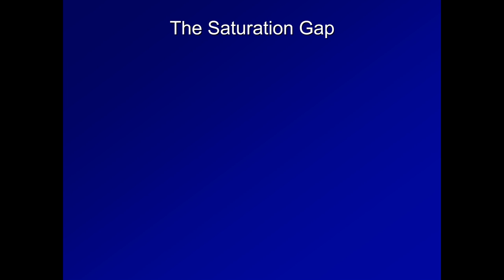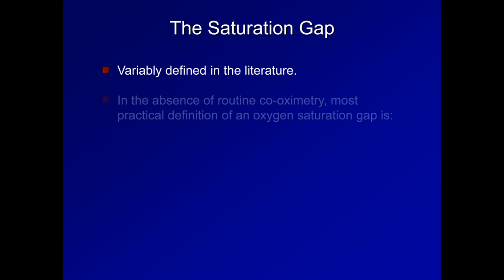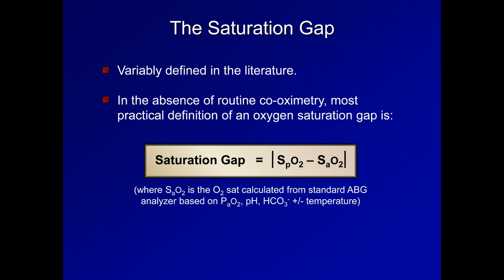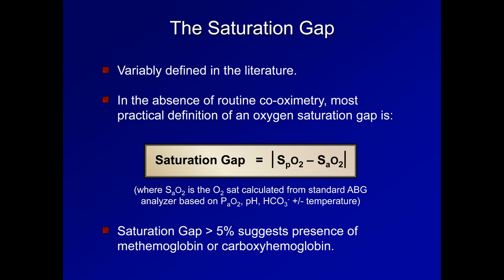Adding to the uncertainty of utility of the saturation gap, it is variably defined in the literature. However, in the absence of routine co-oximetry, the most practical definition of an oxygen saturation gap is the absolute value of the O2 SAT measured via pulse oximetry and O2 SAT calculated from a standard bedside ABG analyzer. A gap greater than 5% suggests the presence of either methemoglobin or carboxyhemoglobin.